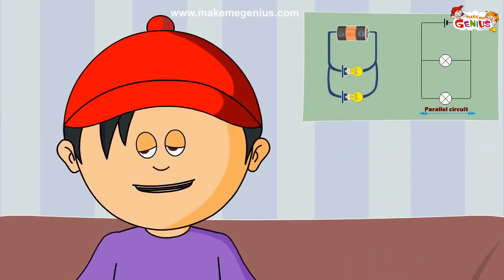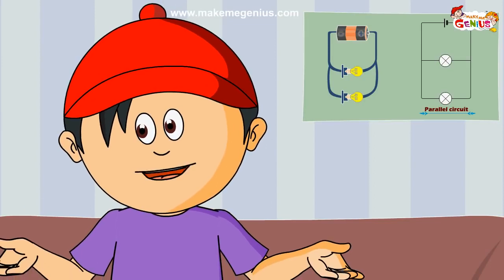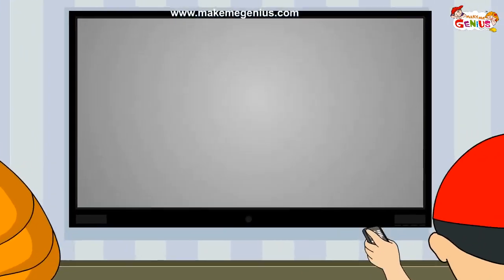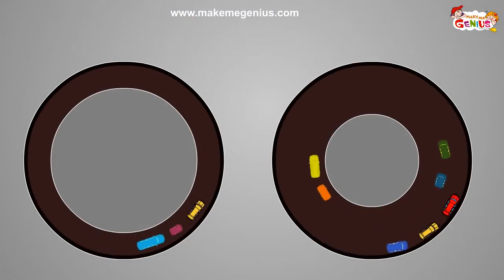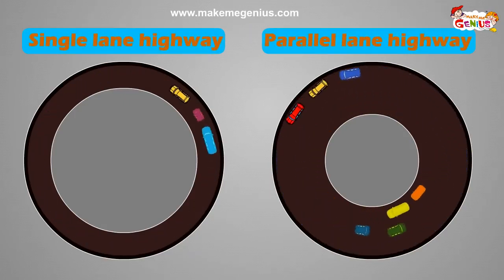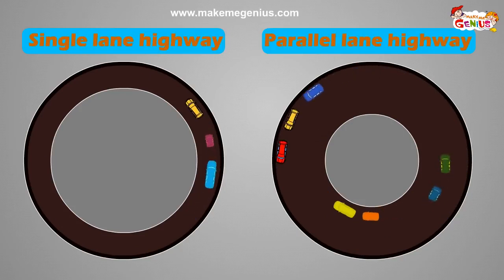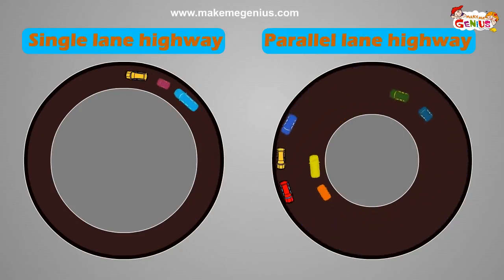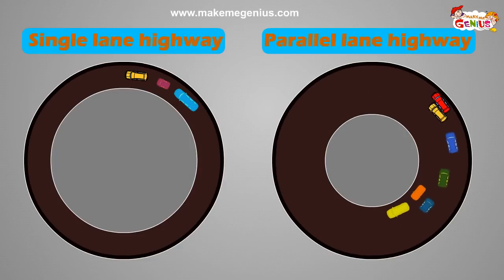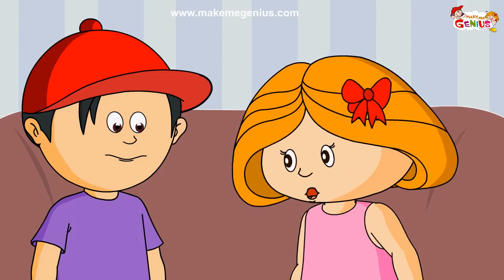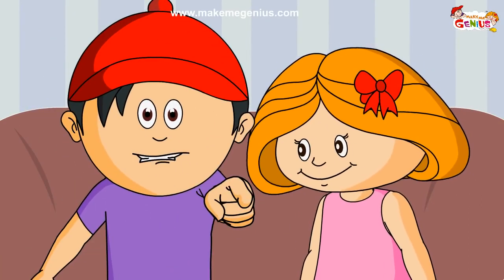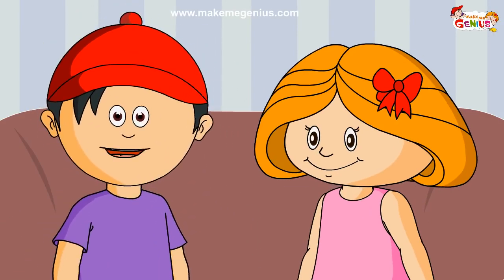I can tell the difference between series and parallel circuits in a very simple way. Look — there are two types of highways here. One is a single-lane highway and another is a multi-lane highway. A single-lane highway is like a series circuit — one car stops and the whole traffic stops. And a multi-lane highway is like a parallel circuit — even if a car breaks down, the rest of the cars can keep moving. Very, very good way to compare both circuits. You can also become a genius — watch MakeMeGenius.com every day.